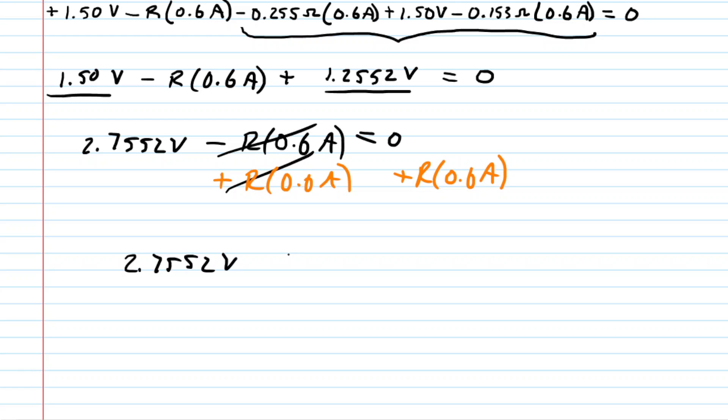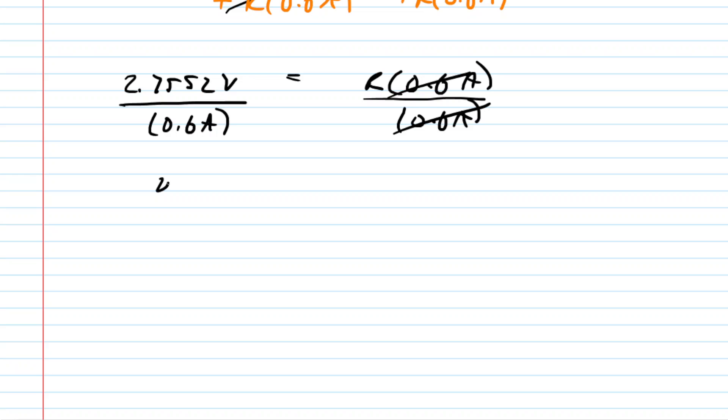So now, to finish off solving for R, we're just going to divide both sides of this equation by the 0.6 amps. This cancels it out on the right-hand side. And our final answer is going to be about 4.59. We have calculated a resistance, so the unit is ohms. This would be the correct answer to part A of the question. So we have completed the loop rule. Let's go back and see what part B is looking for.